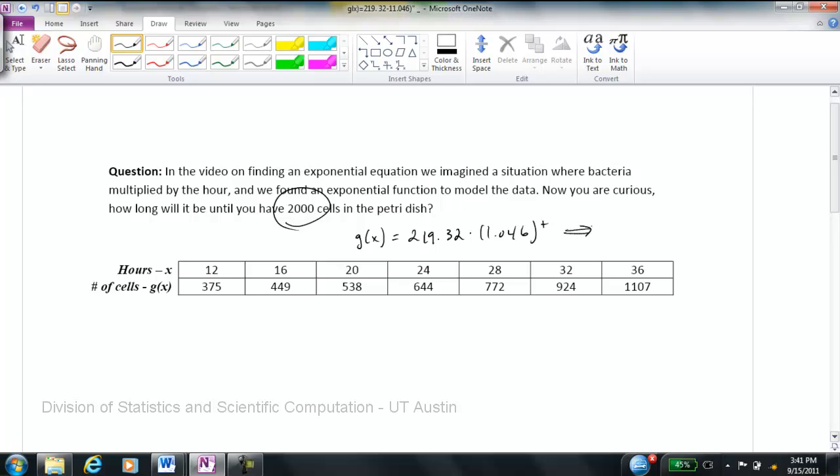This follows the exponential growth function format of g(x) is equal to a times b to the t. This is our a, and this is our b.